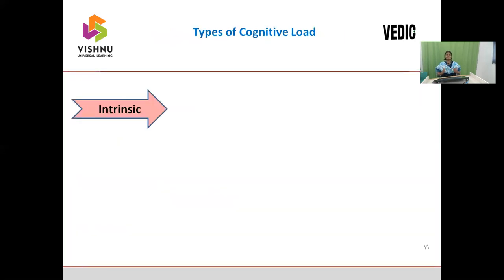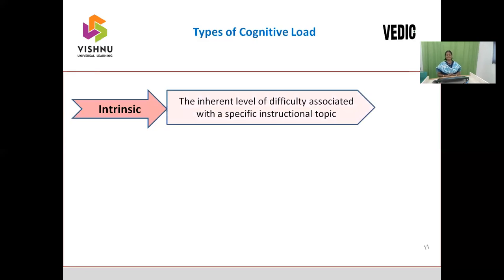Cognitive load is divided into three types: intrinsic load, extraneous load, and germane load. Intrinsic load is the inherent level of difficulty associated with a specific instructional topic. For example, if we ask higher education students to do simple arithmetic operations like addition, subtraction, multiplication, or division of two numbers, there is not much difficulty involved — no much energy consumption, no much effort by the learner.